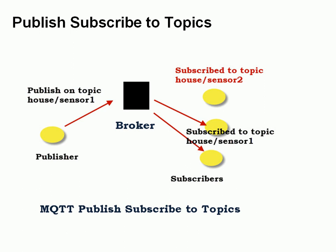Here we have a publisher, and it publishes on a particular topic. The publisher on the left is publishing on the topic 'house/sensor1'. The publisher publishes to a broker, and the subscribers subscribe to that same broker on the same topic. These two subscribers here are subscribed to 'house/sensor1' and will receive all messages sent by that publisher on that particular topic.